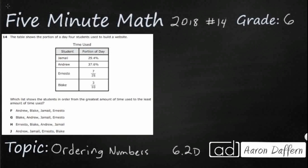So, we have a table here of how long it took for four students to build a website and we have two of them that happen to be percents and then two that happen to be fractions. So what we cannot do is compare these. We need to go from greatest to least.